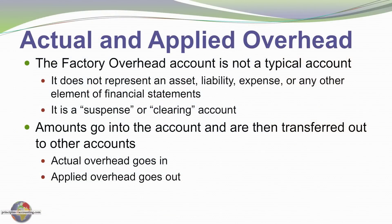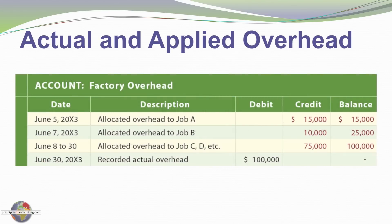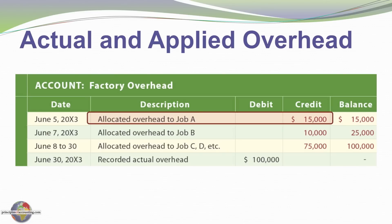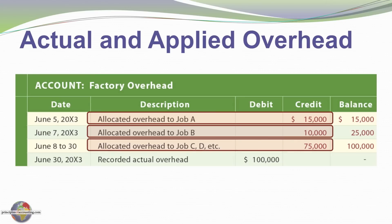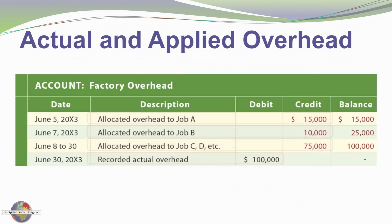Actual costs are placed into the overhead account and applied costs are taken out. Here's the actual ledger page for our factory overhead account. Job A was allocated $15,000 of overhead — we debited work in process for Job A and credited factory overhead $15,000. For Job B, C, D, and so forth, we similarly debited work in process and credited factory overhead. Those are the allocations, and there's the actual cost, the offsetting debit. Notice the account is zeroed out.